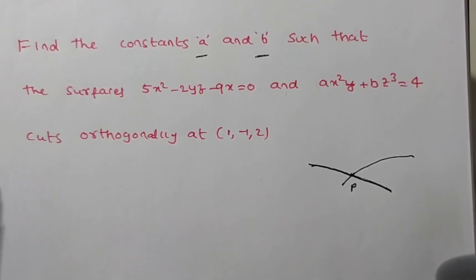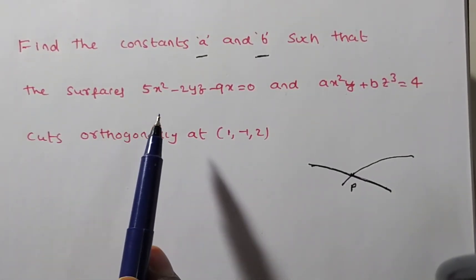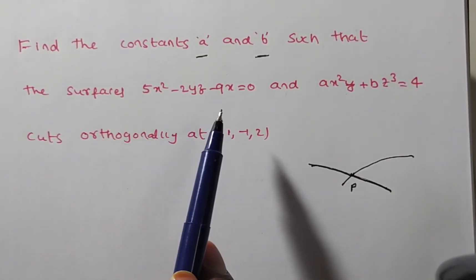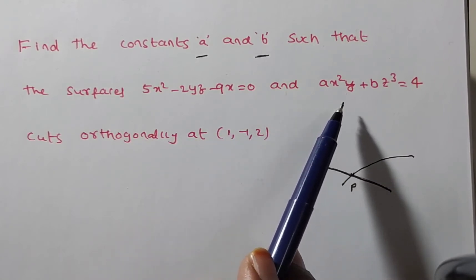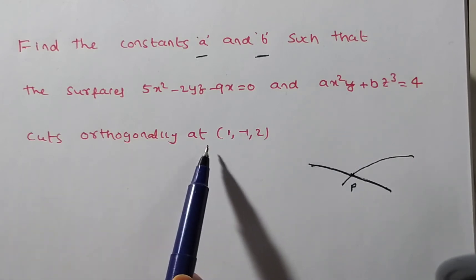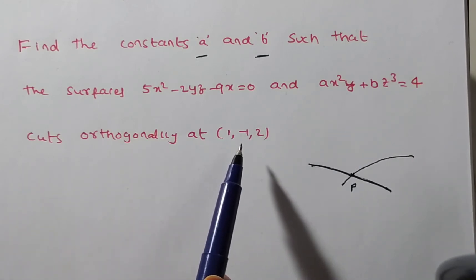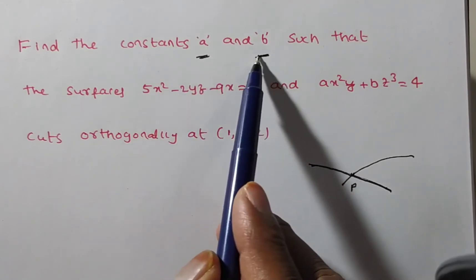Friends, the given problem is: find the constants A and B such that the surface 5x² - 2yz - 9x = 0 and ax²y + bz³ = 4 cuts orthogonally at the point (1, -1, 2). So what do we need to find? The values of A and B.